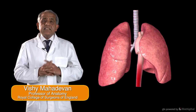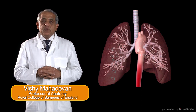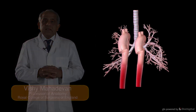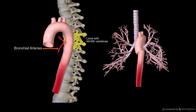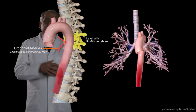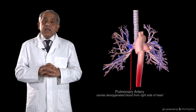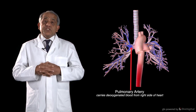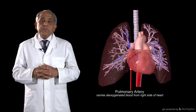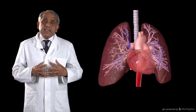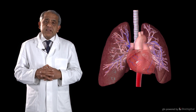Each lung has a double source of blood supply. The bronchial arteries accompany the main bronchus and its many branches, so the bronchial artery is essentially distributed to the bronchial tree. The other artery that enters the lung is the pulmonary artery, carrying deoxygenated blood from the right side of the heart, and the pulmonary artery divides repeatedly within the lung along with the bronchial tree.